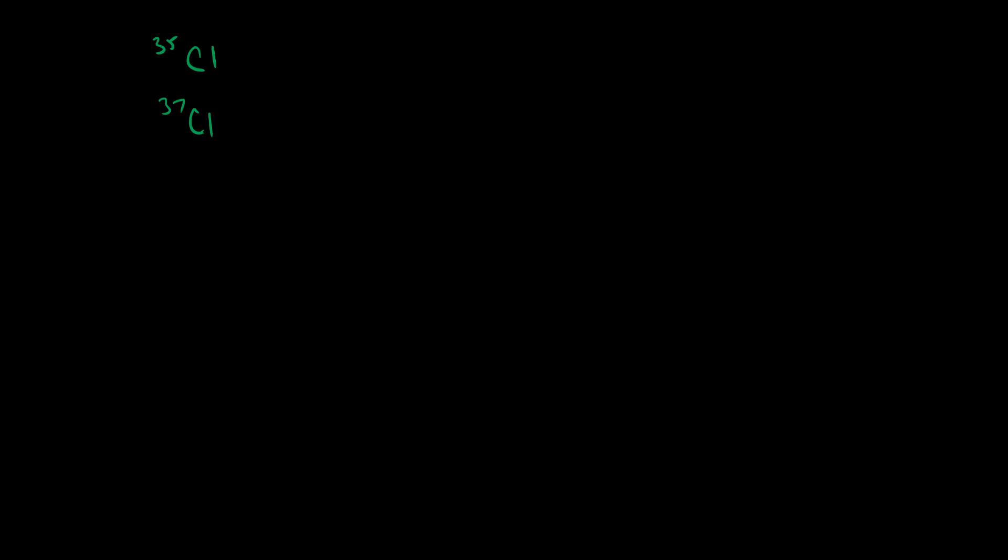Both of these two chlorine atoms have the same number of protons. They both have atomic numbers of 17. The only thing that differs is the number of neutrons. In the case of the chlorine-35 atom, we have 18 neutrons. But in the case of the chlorine-37, we're gonna have 20 neutrons. The difference in these two atoms is the number of neutrons in the nucleus.